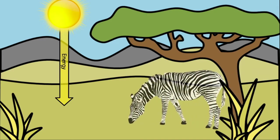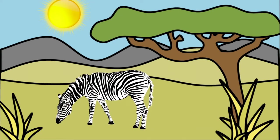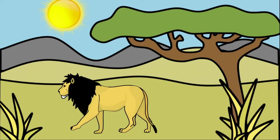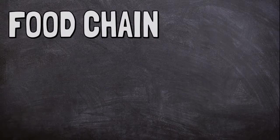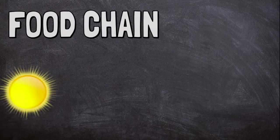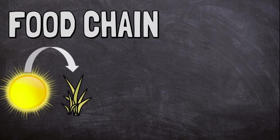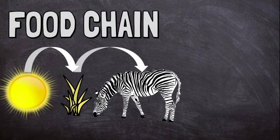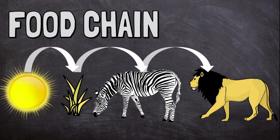A zebra comes along and eats the grass. The zebra gets energy from the grass. A lion hunts and eats the zebra. The lion gets energy from the zebra. In this way, energy is passed from the sun, to the grass, to the zebra, and finally to the lion.